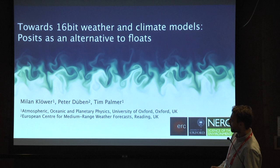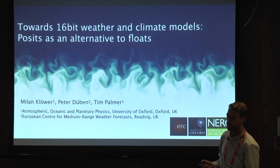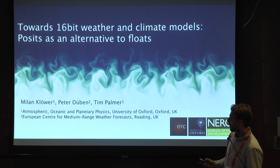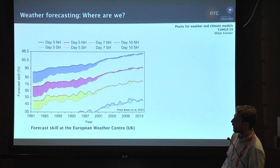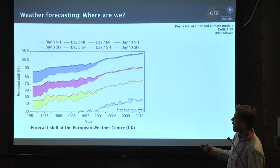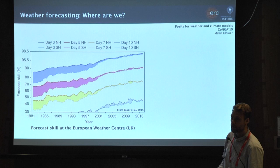I might mix up the words weather and climate models. From a computer science perspective, you can just consider them to be the same - there are some differences, but at the moment they're really interchangeable. In order to get motivated, I thought I'd show you one plot that nicely summarizes where we are currently in weather forecasting. This shows the forecast skill on the y-axis over the last decades of the model we use at the European Weather Center, and you can see this forecast skill basically ramped up more or less continuously, so our weather models got better and better.